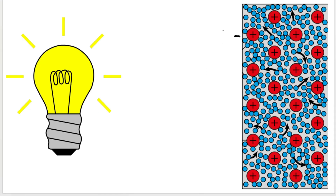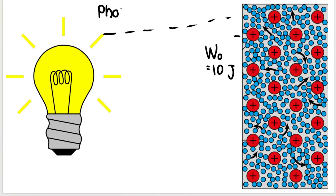Remember in the previous video, we spoke about the work function and the threshold frequency of a metal. Let's pretend the work function of this metal is 10 joules. That means the electrons require 10 joules of energy in order to be set free — to escape from the surface of the metal. So if I shine light onto the surface and the photons have anything less than 10 joules, no electrons will be emitted. If the photon energy is 9 joules, no electrons will be ejected, because the photon energy is less than the work function.